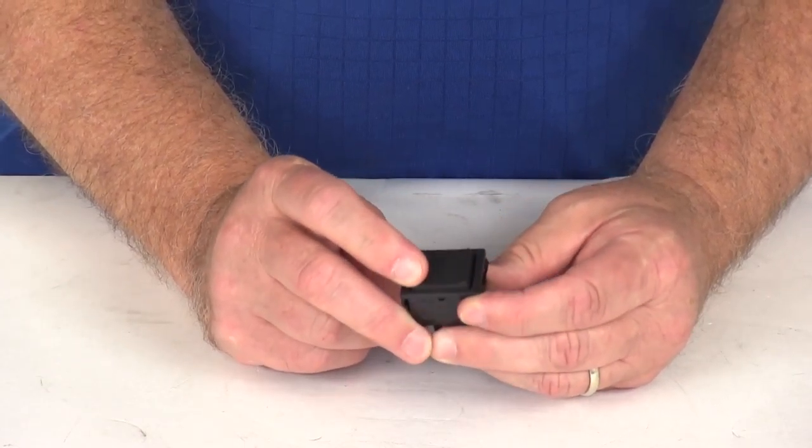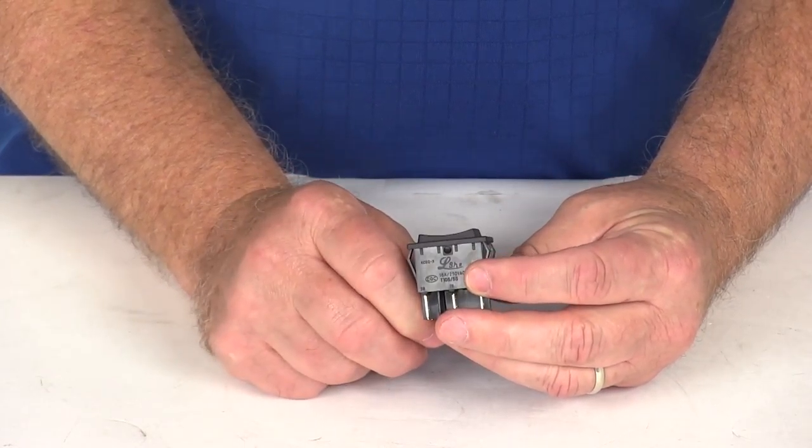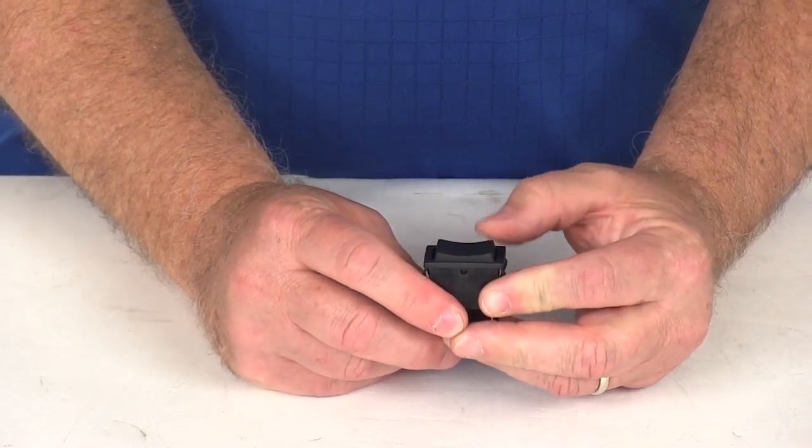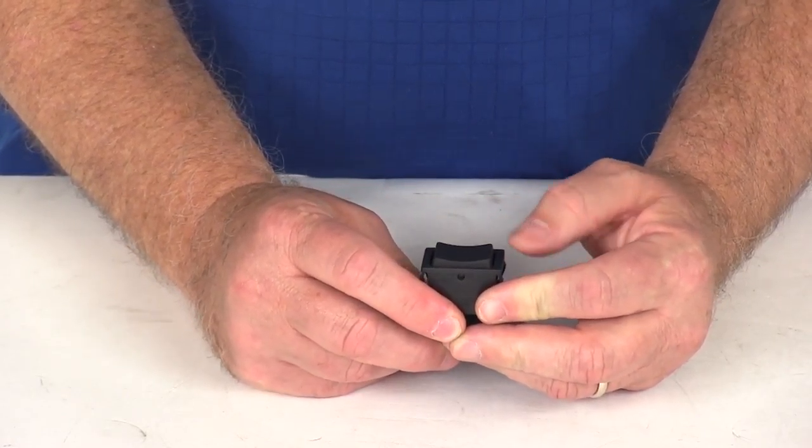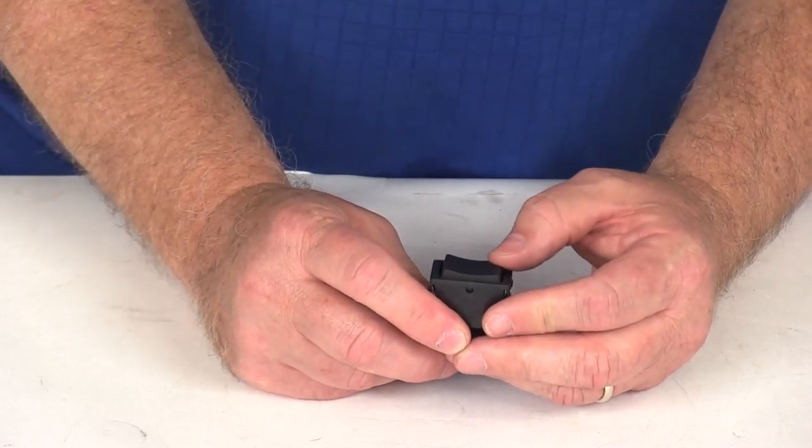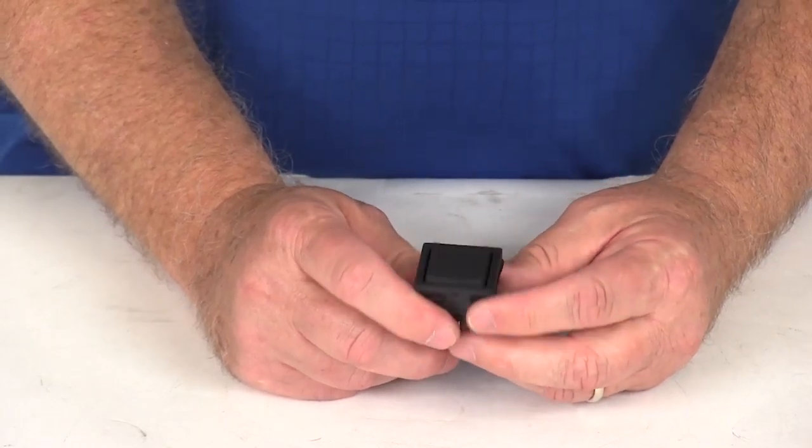The switch itself is a rocker switch. As you can see, when it's in the middle position, it's off. When you push down on either side, it gives you the momentary on. So it will not stay on. As soon as you let go of your thumb or your finger, it will go back into the off position.